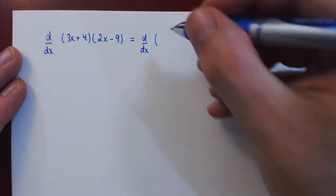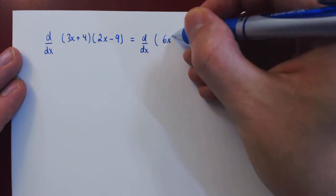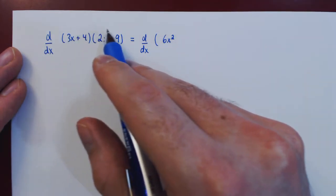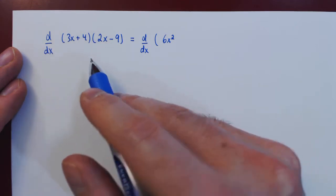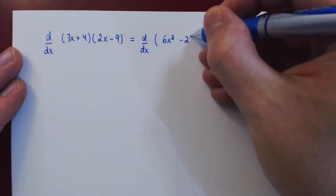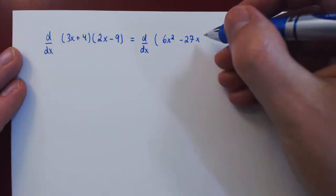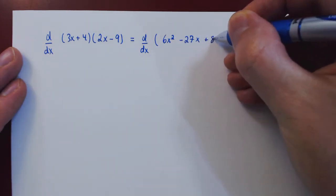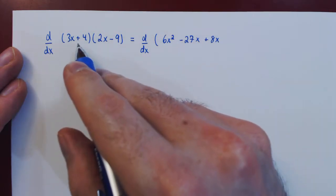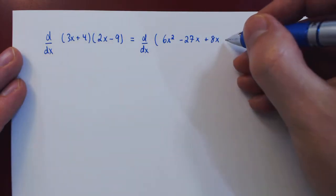So 3x times 2x, 6x squared. Then plus 3x times negative 9, negative 27x. Then plus 4 times 2x plus 8x. And plus 4 times negative 9, negative 36.